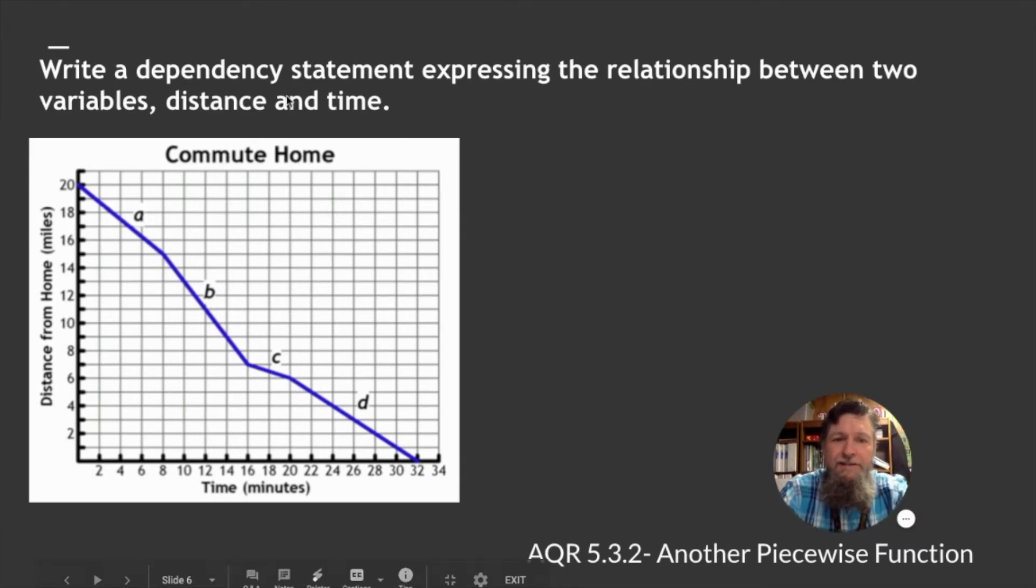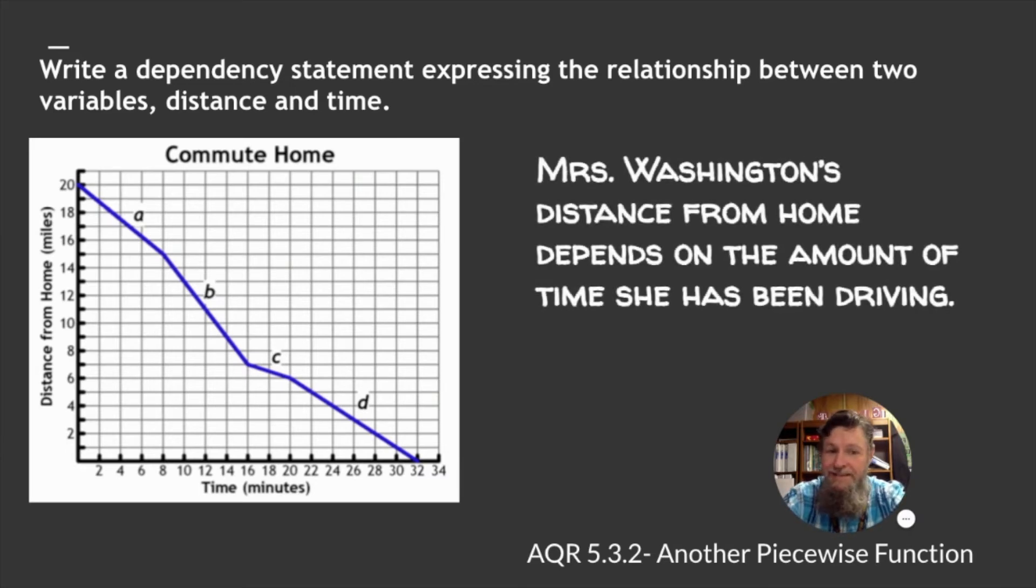What a dependency statement expressing the relationship between two variables, distance and time. So, first of all, which variable is dependent on the other? If you think about this for a second, the distance we travel is completely dependent on the time. Time doesn't change because we've traveled any distance. Time changes, it just keeps marching on. So, it's pretty simple. Time is the independent variable, and distance is the dependent variable. Mrs. Washington's distance from home depends on the amount of time she has been driving. That's a great way to describe that dependency statement.